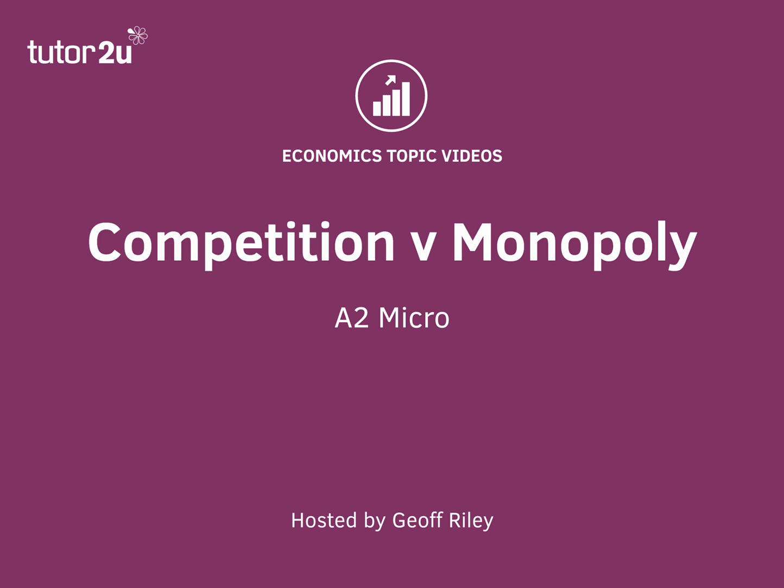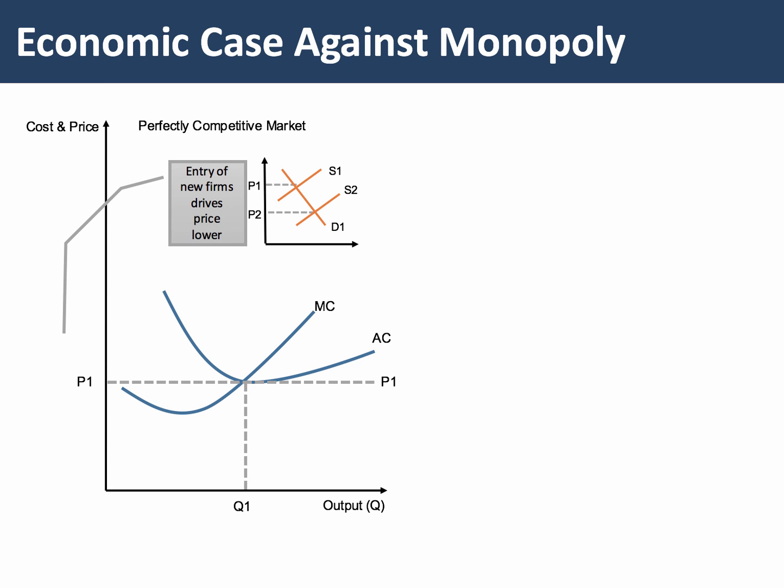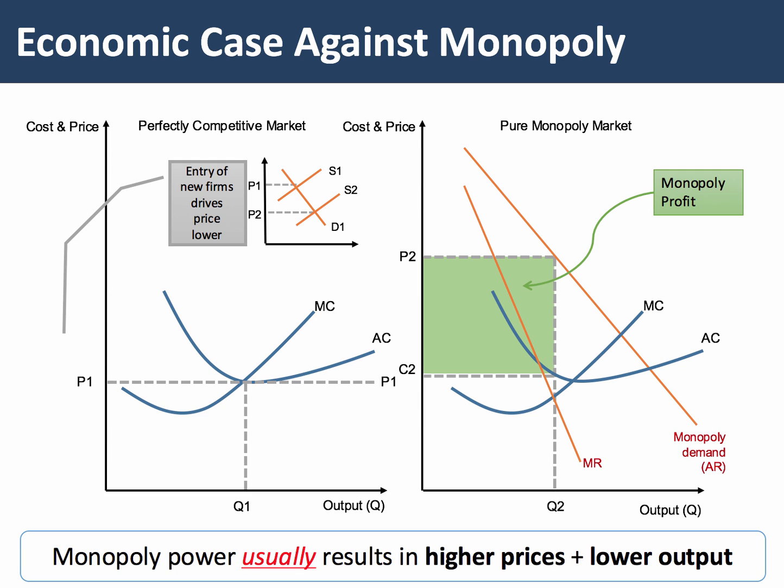Contrasting a competitive market with a monopolistic market: in perfect competition the long-run equilibrium is where price equals average cost, which is an economically efficient outcome. In monopoly, the profit-maximising output is Q2 and the monopolist can charge a high price P2, making significant monopoly profit. This means monopoly is allegedly inefficient because they're pricing well above marginal cost, producing a lower output, and there's a loss of productive efficiency.